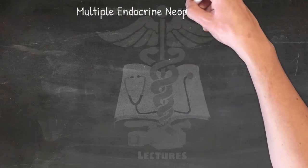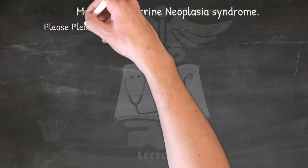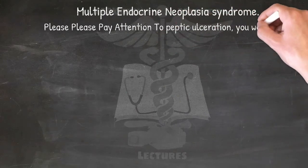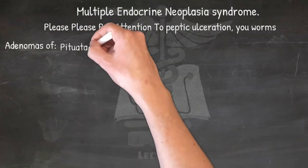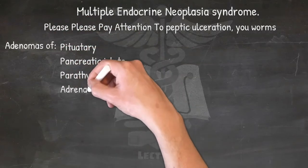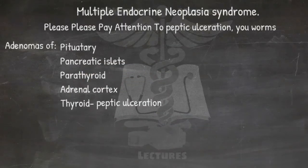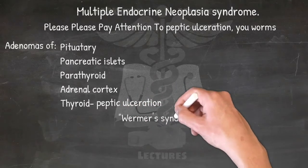Multiple endocrine neoplasia (MEN) syndrome: please pay attention to peptic ulceration, you worms. Here we are talking about adenomas of pituitary, pancreatic islets, parathyroid, adrenal cortex, and thyroid, associated with peptic ulceration. This syndrome is called Wermer's syndrome.